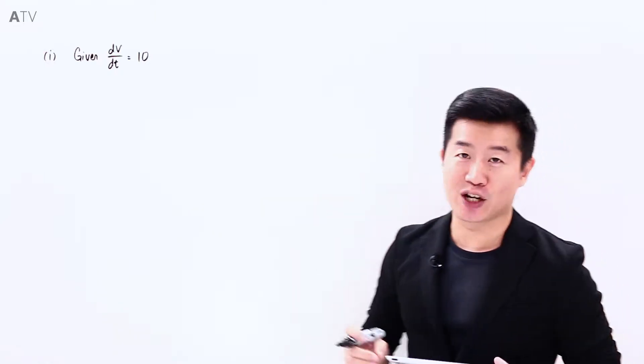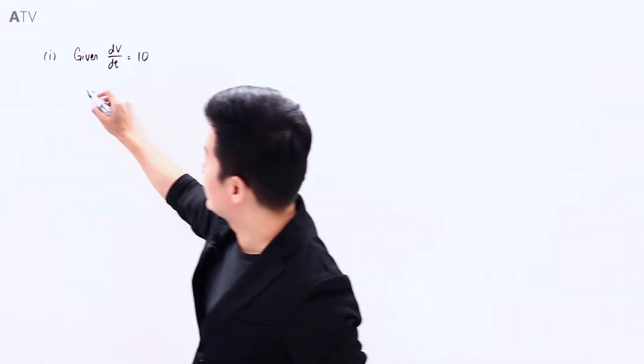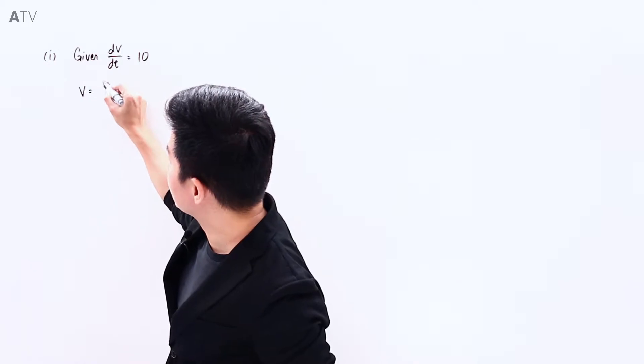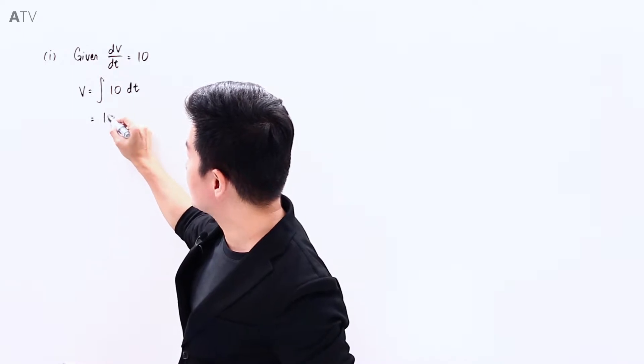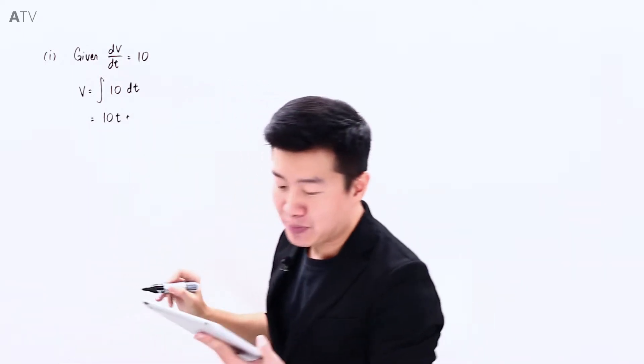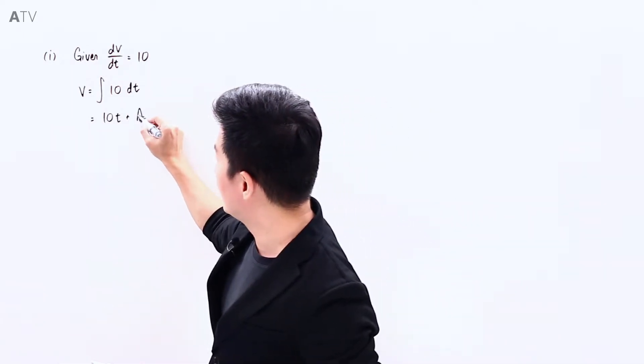We're given that dv/dt is a constant 10, which means that in order for us to find v, it is going to be just simply integration of 10 dt, which means that v is going to be 10t plus an arbitrary constant. Let me go for a.